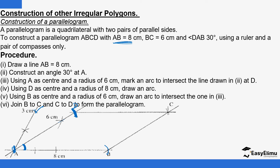Next, draw a line parallel to AB passing through B. We have also done a video on constructing a line parallel to a given line through a given point — you can use a set square or a ruler and pair of compasses. Using compasses only, you transfer angle BAD to point B. Using B as center and radius AB, make an arc; then B as center and radius AD, draw another arc. Where the two arcs meet gives point C. Then join B to C and D to C to complete the parallelogram.